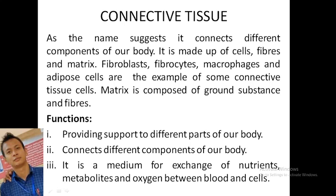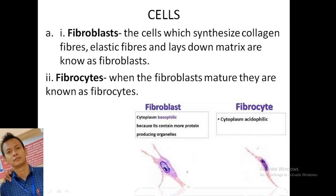Connective tissue is the medium for exchange of nutrition, metabolic oxygen, and waste between blood and cells. In the cells, they are divided into two types: fibroblasts and fibrocytes. Fibrocytes are responsible for the synthesis of collagen fibers, elastic fibers, and ground matrix. You can see the picture of both fibroblasts and fibrocytes — you can see the basophilic cytoplasm and the acidophilic character of fibrocytes.